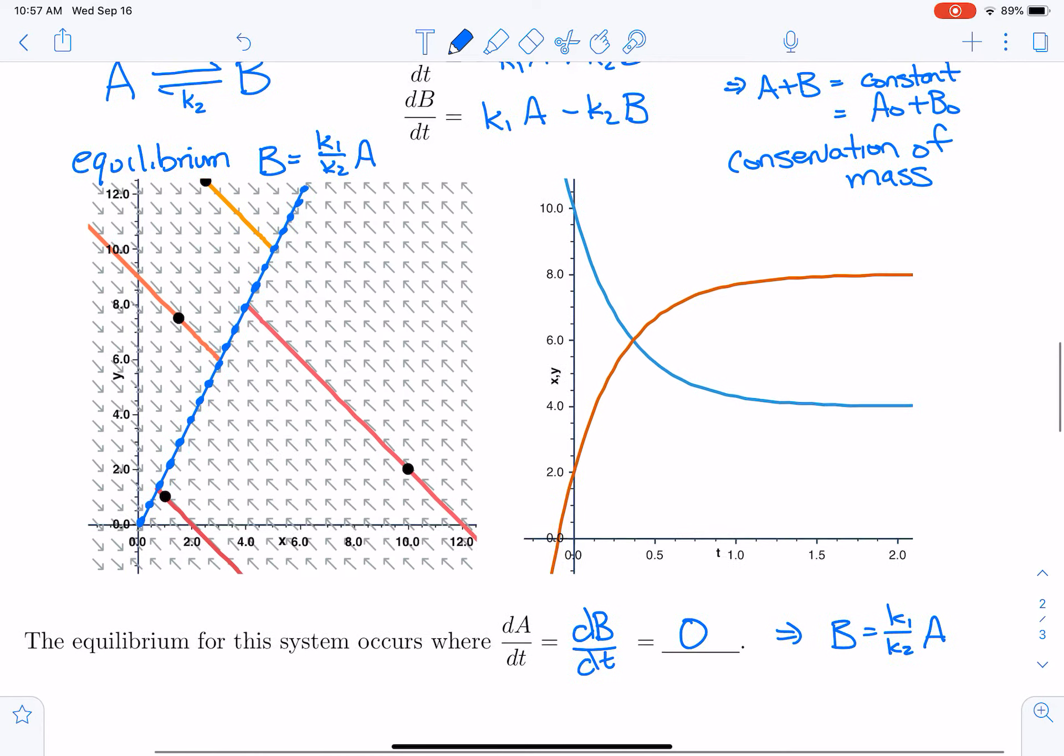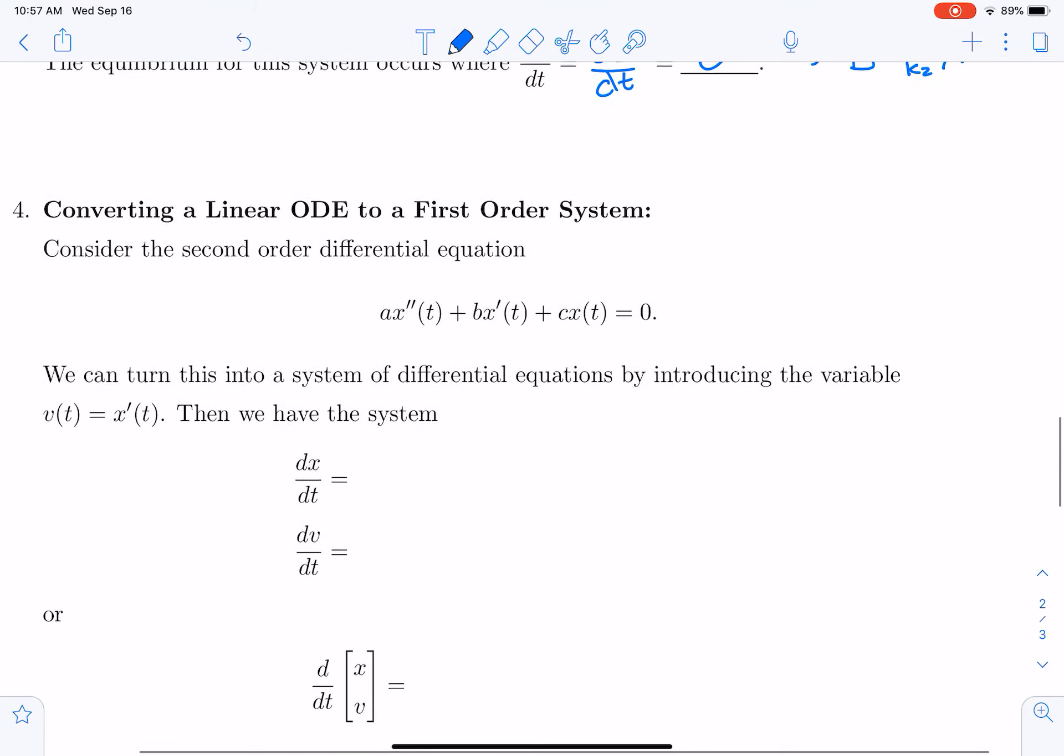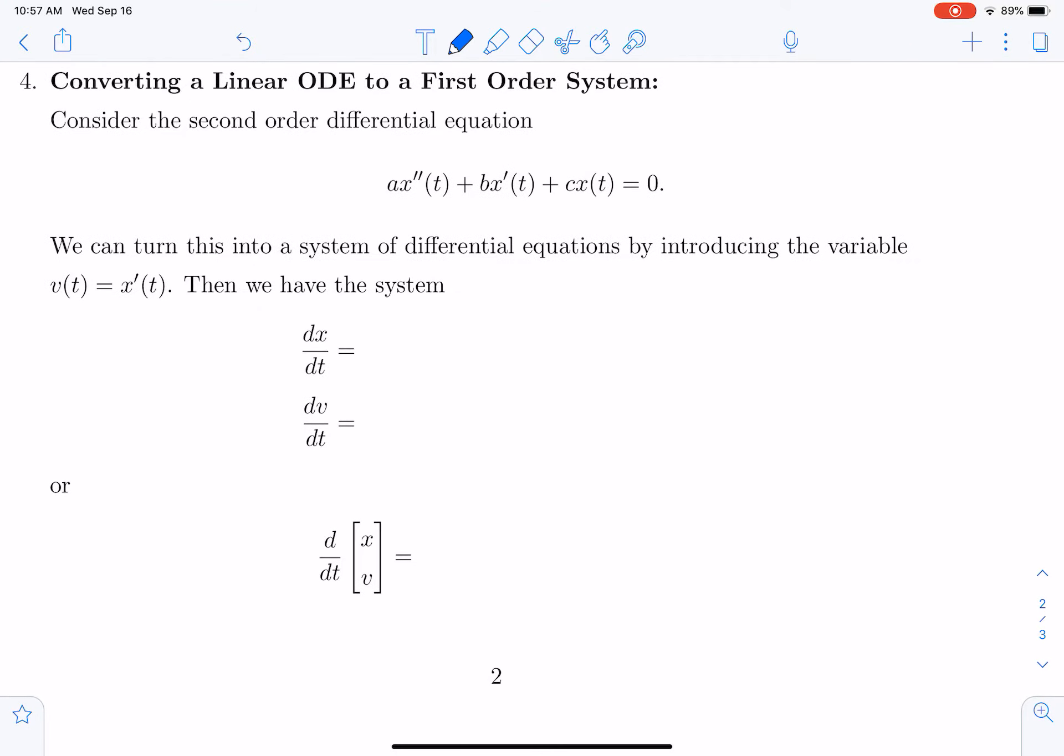So let's move on to a final example that should seem familiar. Okay, and that is this second order differential equation: A times x double prime plus B times x prime plus C times x is equal to zero. And it turns out that we can turn this system—this second order differential equation—into a first order system of differential equations.